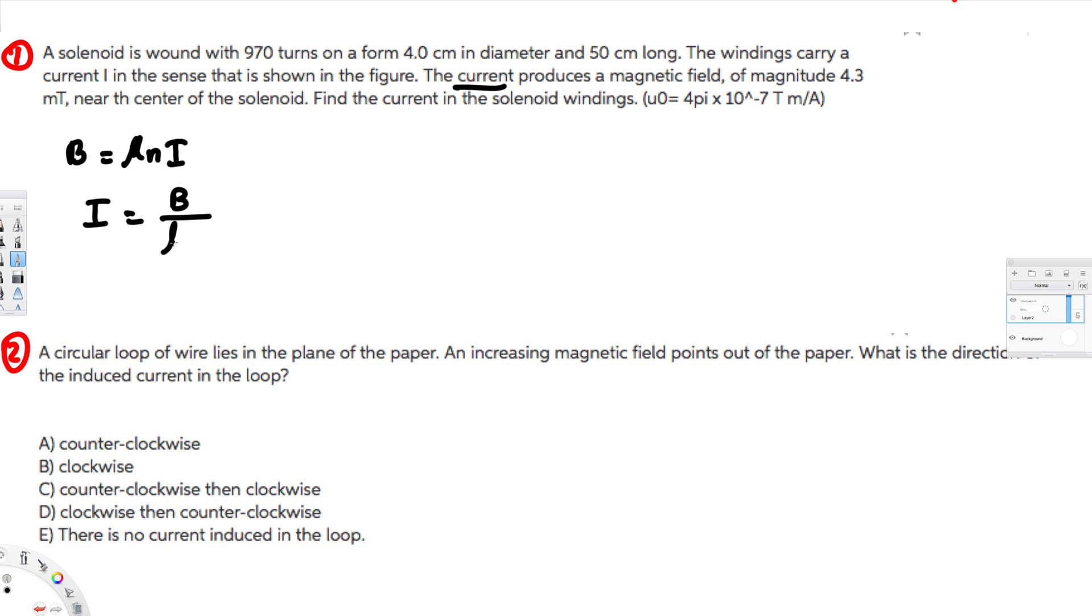We have B as 4.3 millitesla, and μ is the permeability constant 4π times 10 to the power of minus 7. N is turns per length. To find that, we use the formula n equals number of turns per length. Number of turns is 970 over length 50 centimeters. If you convert this to meters, that's 50 times 10 to the power of minus 2. If you calculate this value, that gives you 1940 meter minus 1.